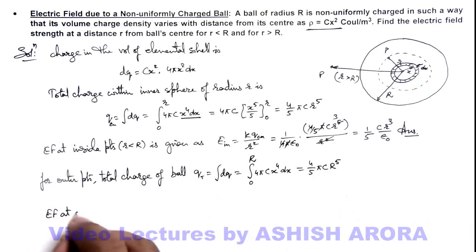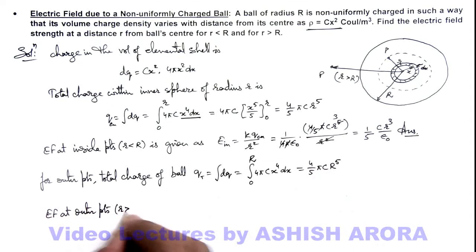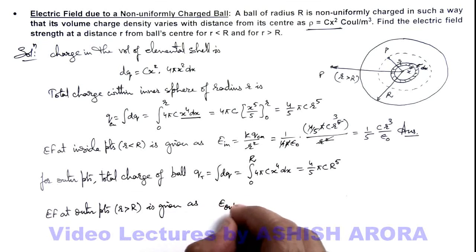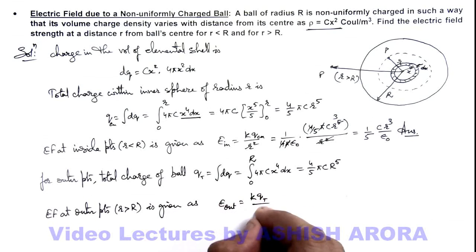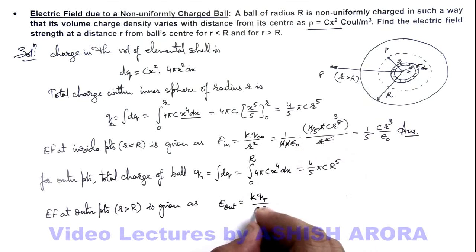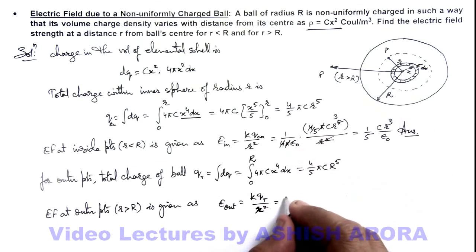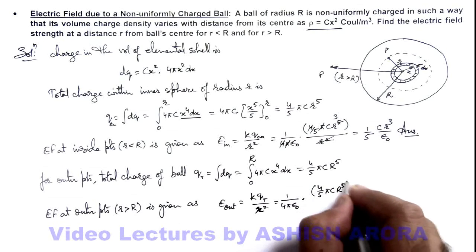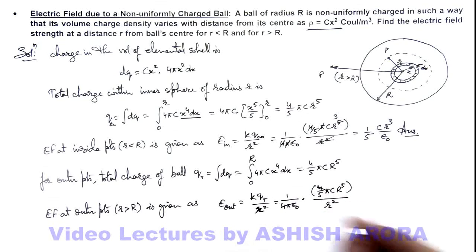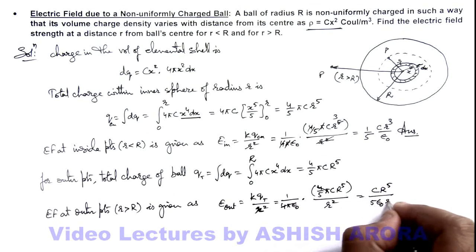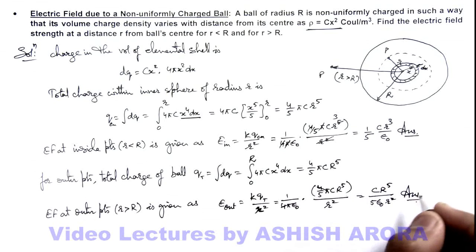The electric field at outer points, where r is greater than R, is given as E_outside = kQ_total / r². Substituting k = 1/(4πε₀) and Q_total = (4/5)πcR⁵, divided by r², the 4π terms cancel out, and the result we get is E_outside = cR⁵ / (5ε₀r²). That is the answer for the electric field at outer points of this sphere.